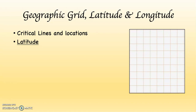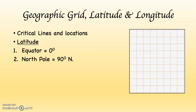There are three important lines and locations to start with when we look at latitude. First, the equator, which gets a designation of zero degrees. The North Pole, which gets a designation of 90 degrees north — written as 90°N. And the South Pole, which is at 90 degrees south — written as 90°S. You've probably heard of all three of those.